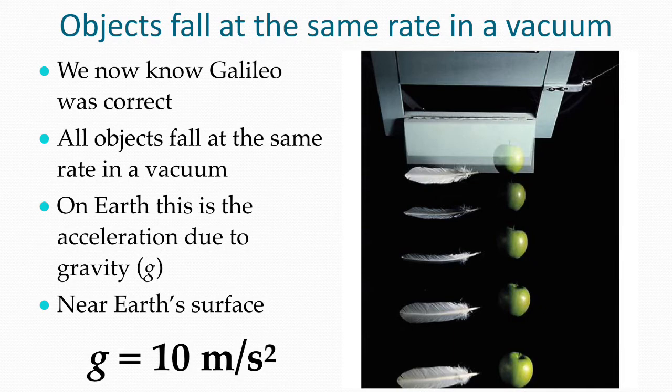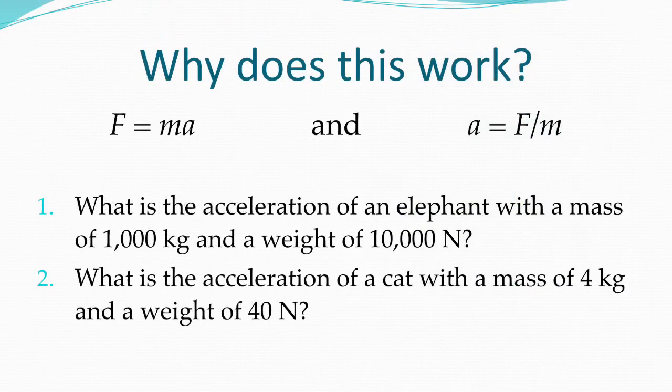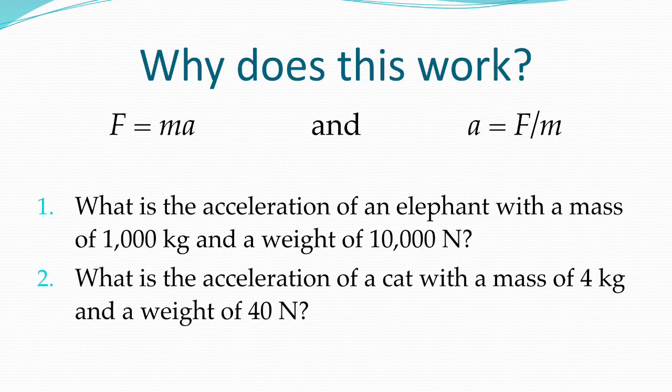It's been suggested that Galileo tested this idea by dropping lighter and heavier objects from the Leaning Tower of Pisa to see if they hit the ground at the same time. Whilst he is unlikely to have done this himself, the experiment has been repeated many times since. We now know that Galileo was indeed correct. If objects are falling, at least in a vacuum, they will fall at the same rate. And on Earth, this is the acceleration due to gravity, G, which near the Earth's surface is 10 meters per second squared. To see why this works, we use the equation F equals ma. This time we rearrange it to make acceleration the subject, so acceleration equals force divided by mass. And here you have two examples of objects, one an elephant and the other a cat. If both are dropped, they will fall with an acceleration dependent on their weight and their mass. Pause the video now while you calculate what that acceleration will be for the two objects.